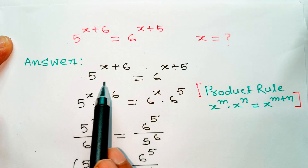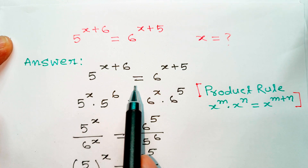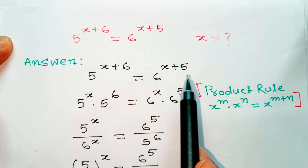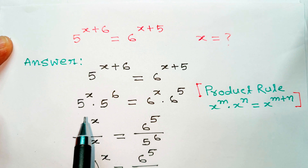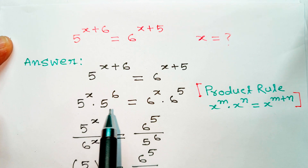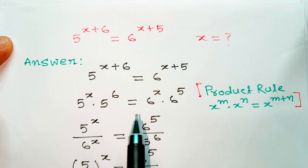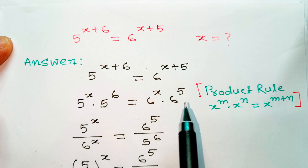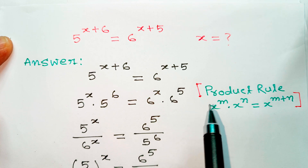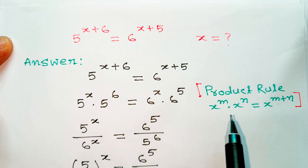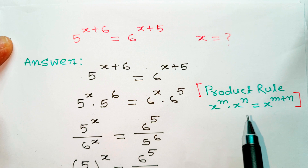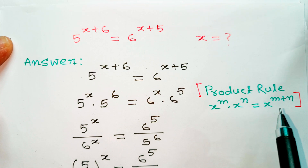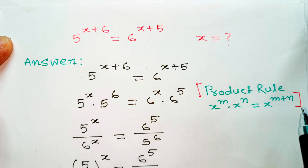Answer: 5 to the power x plus 6 equal 6 to the power x plus 5. Applying the product rule — 5 to the power x into 5 to the power 6, equal 6 to the power x into 6 to the power 5. Product rule: x to the power m into x to the power n equal x to the power m plus n.